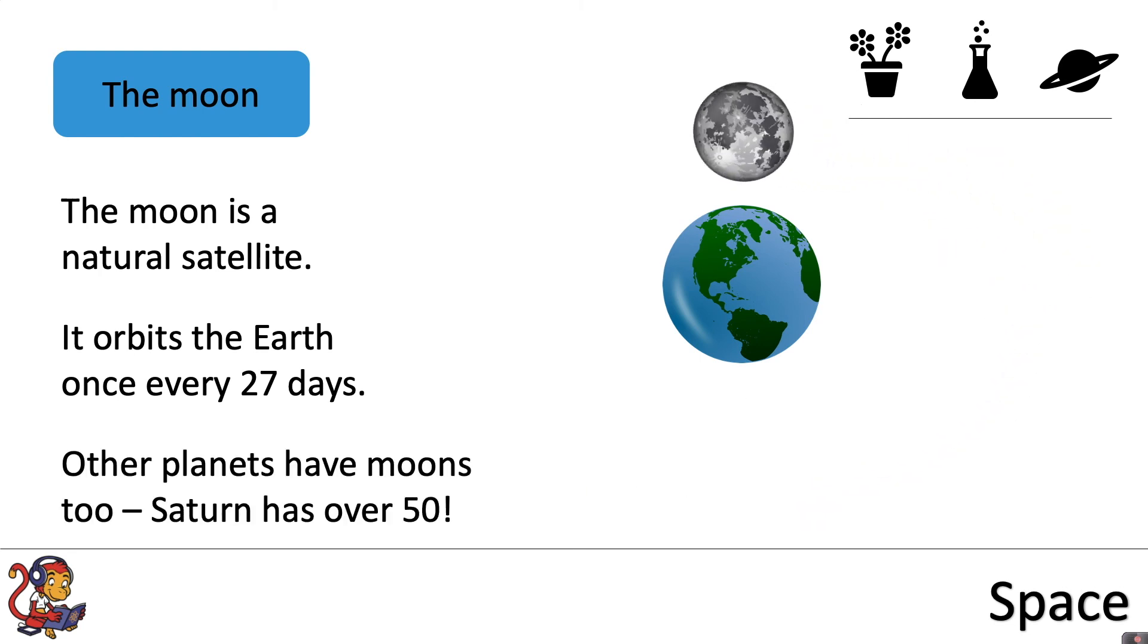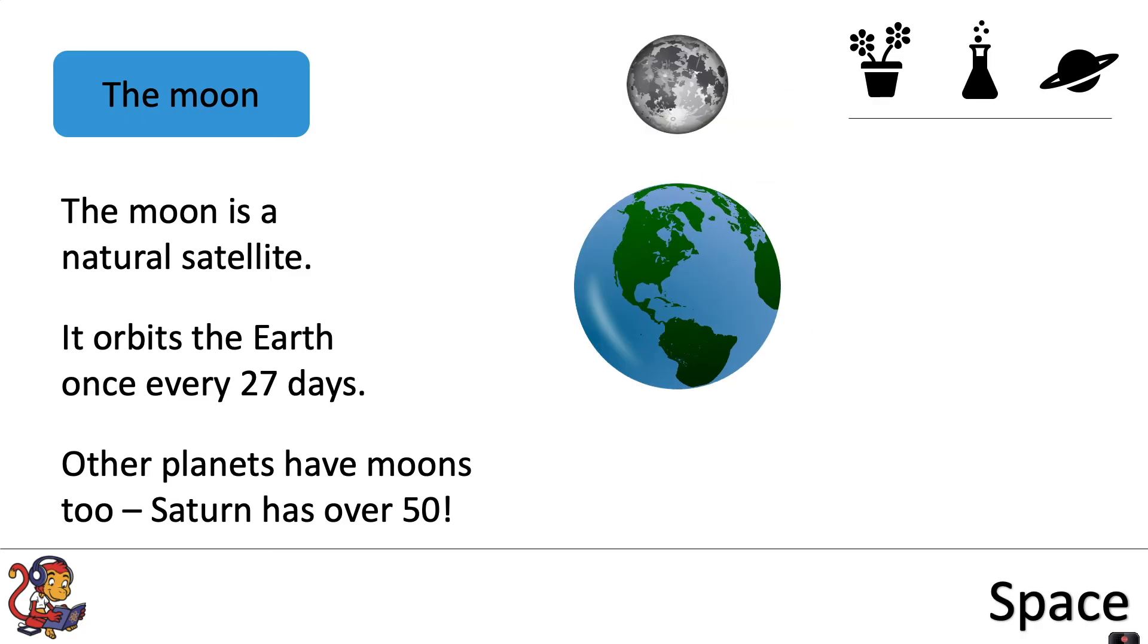Other planets have moons too. Saturn has over 50. So the Moon is a natural satellite but there are other satellites that humans put into space too.